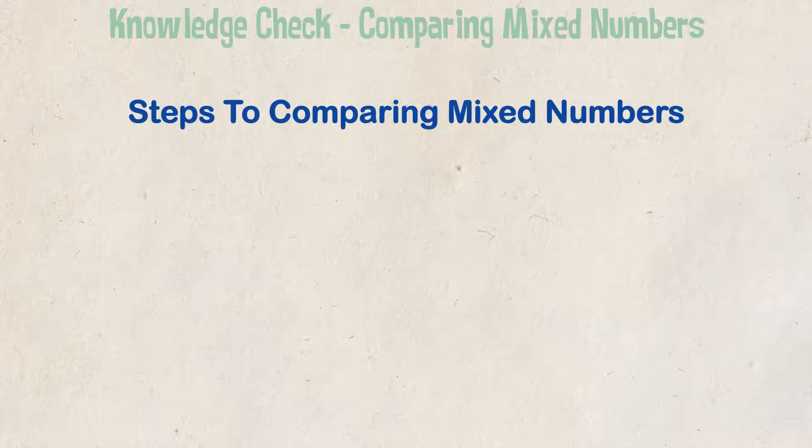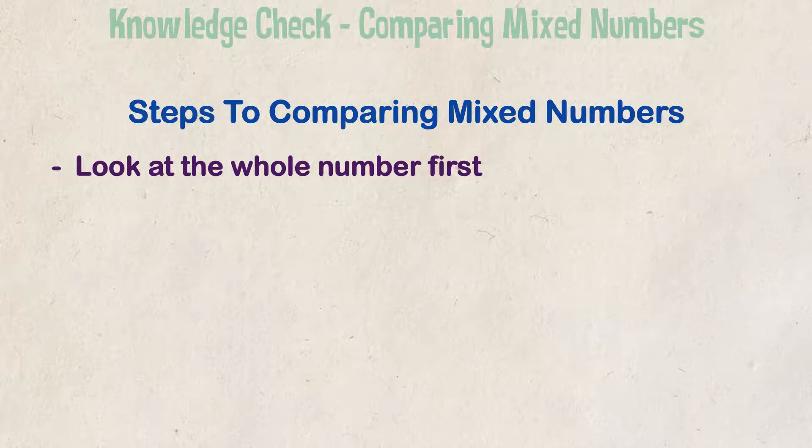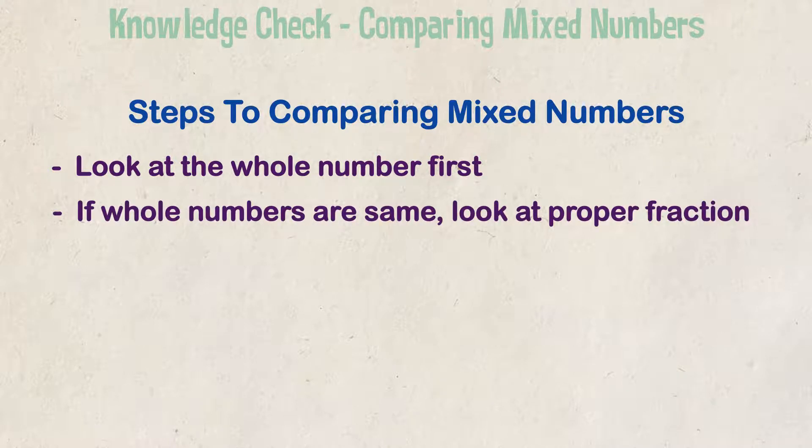If you remember from my previous video, the first step in comparing mixed numbers is to look at the whole number. If the whole numbers are the same, then you move on to comparing the proper fraction portion. The easiest way to compare the proper fraction portion is by performing cross multiplication.